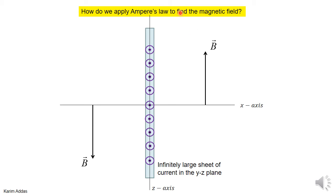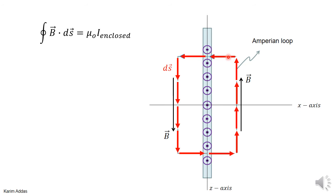Now we use Ampere's law to find the magnitude of the magnetic field. We take an Amperian loop in the shape of a rectangle, centered on the sheet, so both sides are equidistant from it. We take the dS vectors going around in a specific direction because when you curl your fingers that way, the thumb points out of the page — the same direction as the current — making the right-hand side of Ampere's law positive.